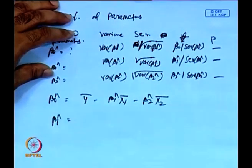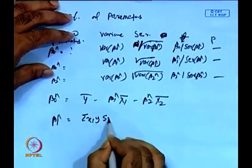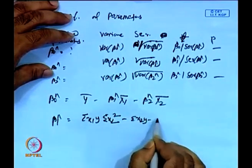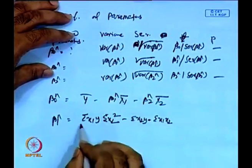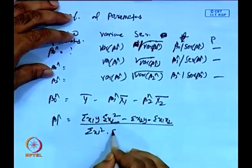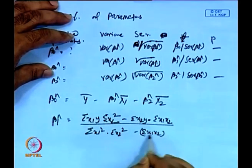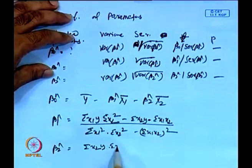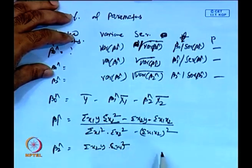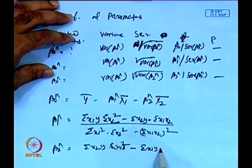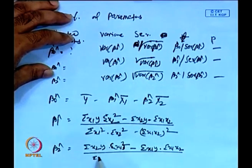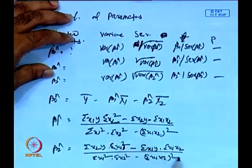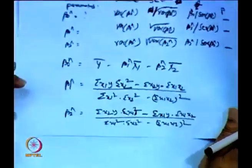Beta1-hat equals summation(x1*y)*summation(x2²) minus summation(x2*y)*summation(x1*x2), divided by summation(x1²)*summation(x2²) minus summation(x1*x2)². Similarly, beta2-hat equals summation(x2*y)*summation(x1²) minus summation(x1*y)*summation(x1*x2), divided by summation(x1²)*summation(x2²) minus summation(x1*x2)². This is how the estimated parameters are obtained.